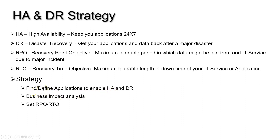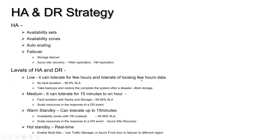To define your strategies, the main things you need to consider are: identify different applications to enable HA and DR, perform a business impact analysis, and set RPO and RTO. Based on the model or the tolerance level your business can take, you can consider one of the available options. For Azure VMs on IaaS, you have availability sets, and the next level is availability zones for increased SLA.